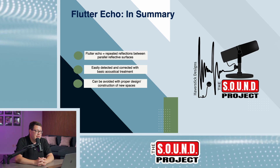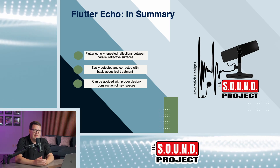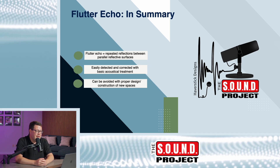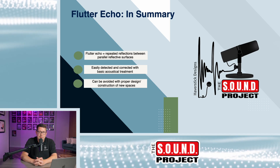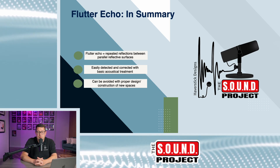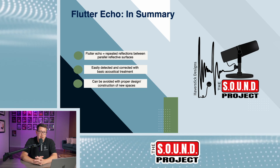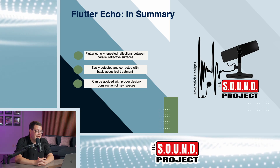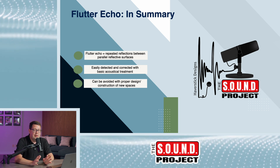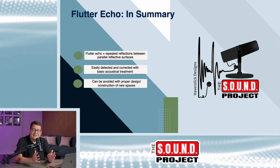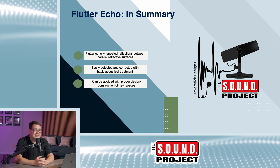In summary, flutter echo is repeated reflections between parallel surfaces that can sound like a ping-pong ball bouncing back and forth. It's easily detected and corrected with basic acoustical treatment — it doesn't take a lot to address it, but it sure can be distracting when present. It can also be avoided with proper design and construction in new spaces. Sound will always bounce around the room, but as long as it's not continuing that flutter echo pattern, it will be less distracting. That's been another episode of The Sound Project — if you've ever experienced flutter echo, please comment below, and we'll see you next week.